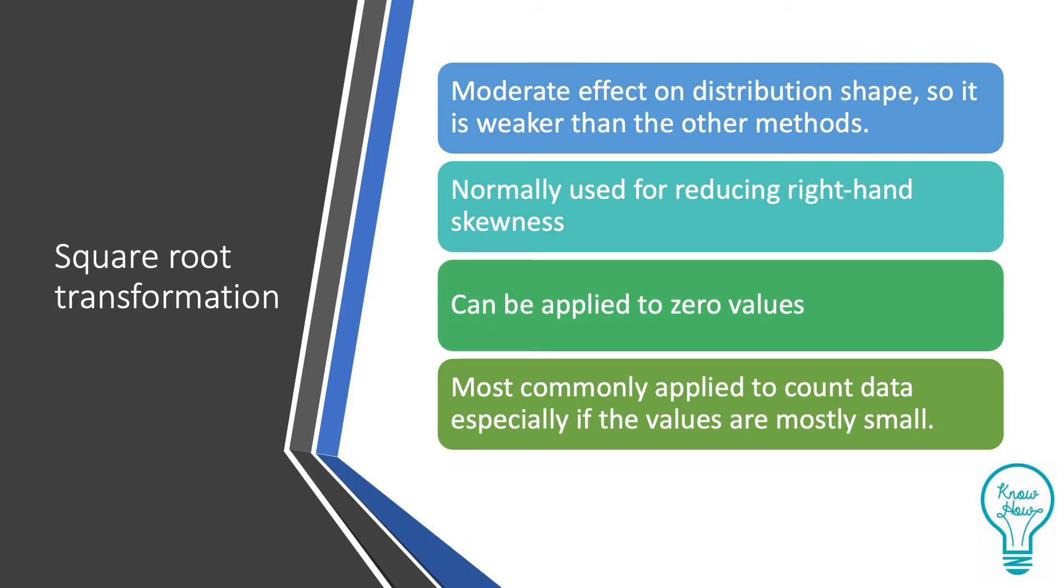The square root is a transformation method with a moderate effect on distribution shape, so it is weaker than the other methods. It is also typically used for reducing right-hand skewedness and has the advantage that it can be applied to zero values. It is most commonly applied to count data, especially if the values are mostly small.